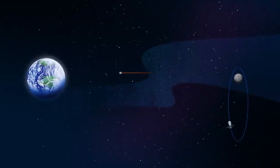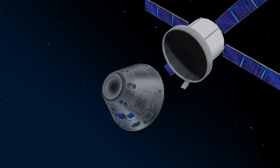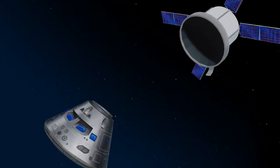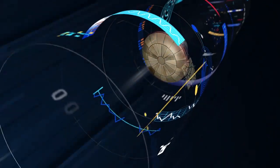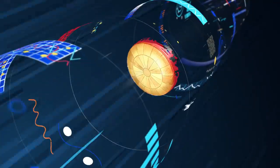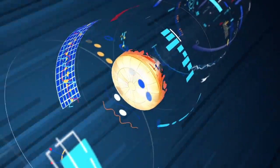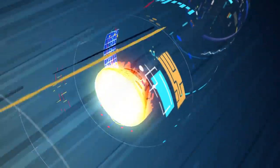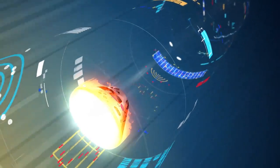As they near the end of this journey, the service module is released, and the crew module is oriented heat shield first. Entering Earth's atmosphere at 25,000 miles per hour, the friction of air slows Orion considerably, while also subjecting it to temperatures of 5,000 degrees.